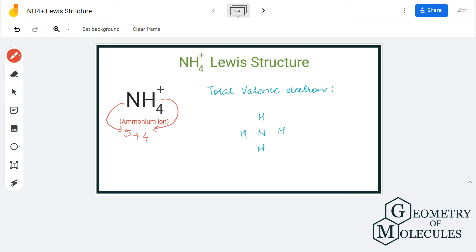This means we have nine electrons. But here, as there is a plus charge, it means that it is giving away one of its electrons, and hence we will minus one from nine. So we have eight valence electrons for NH4+.